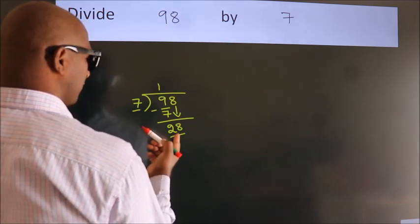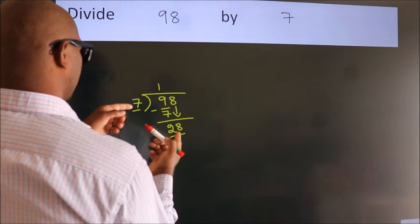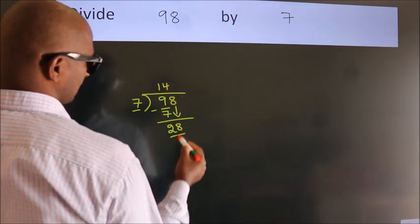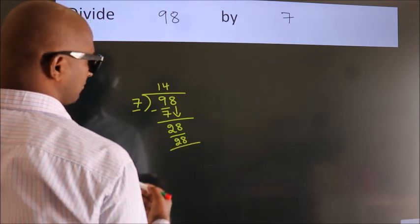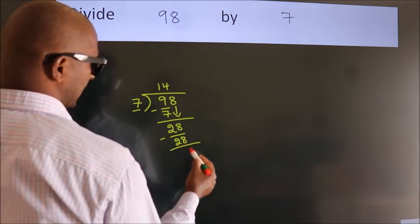When do we get 28? In the 7 table. 7 fourths, 28. Now we subtract. We get 0.